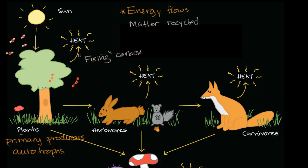It's not a perfectly efficient process. Not all of the energy from the sun is going to be stored — some is reflected. Even the plant itself, as it lives, reproduces, and its cells divide, uses some of that energy. Eventually that energy is released as heat. You'll see this trend a lot in thermodynamic systems: you use energy to do work, but in the process you produce heat. But this is just the beginning of our energy flow.